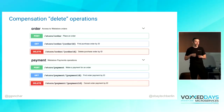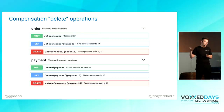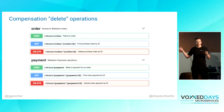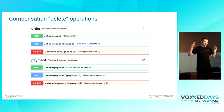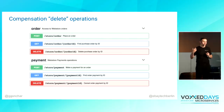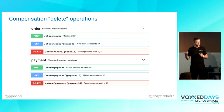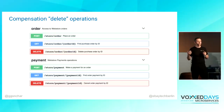The first ingredient is so-called compensating operations. Coming back to orders and payments — we design APIs for our services. We create an endpoint to create an order, to receive an order by ID, and then we add the compensating operation: delete an order if something goes wrong. The same goes with payments — we create an endpoint to create a payment, receive a payment, and we might want to cancel the payment afterwards.